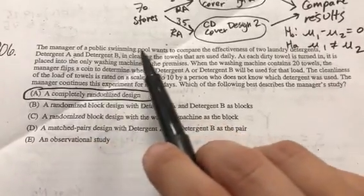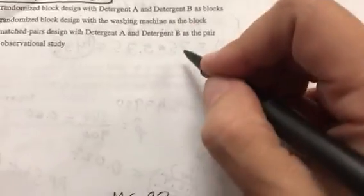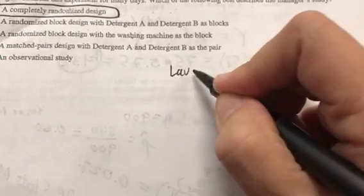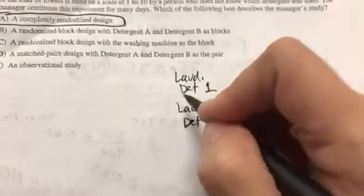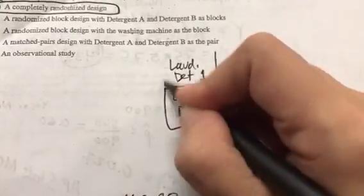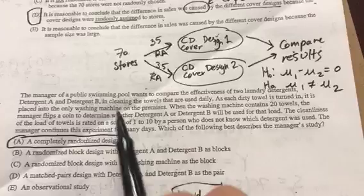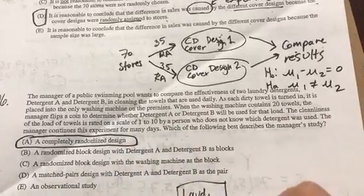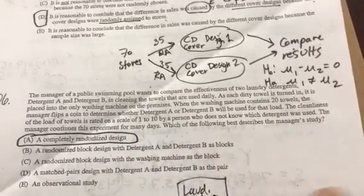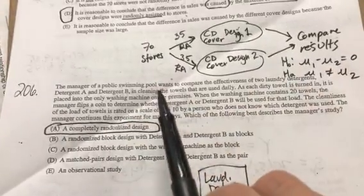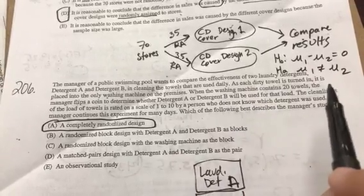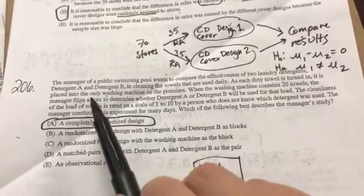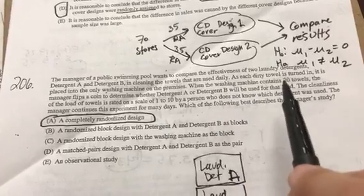Next question states: the manager of a public swimming pool wants to compare the effectiveness of two laundry detergents. Okay, it's pretty similar. I have laundry detergent one and laundry detergent number two. Now it states detergent A - oh so we call it A and B - even better because it's a little bit different than last problem.